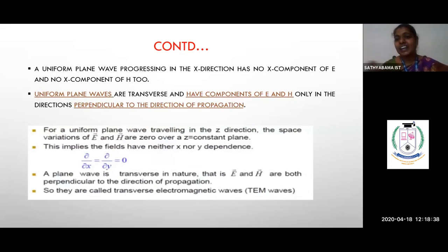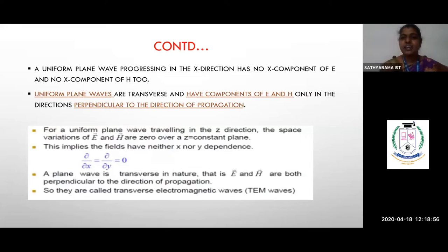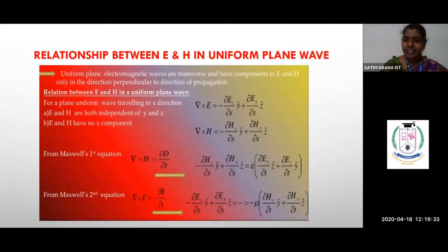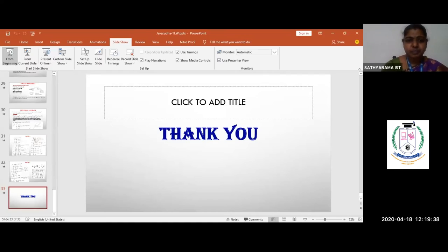In a Cartesian coordinate system with x, y, and z directions, all three directions carry electric and magnetic field components: Ex and Hx along x, Ey and Hy along y, and Ez and Hz along z. For a uniform plane wave, the electric and magnetic fields are transverse — in the direction of propagation, those components do not exist.